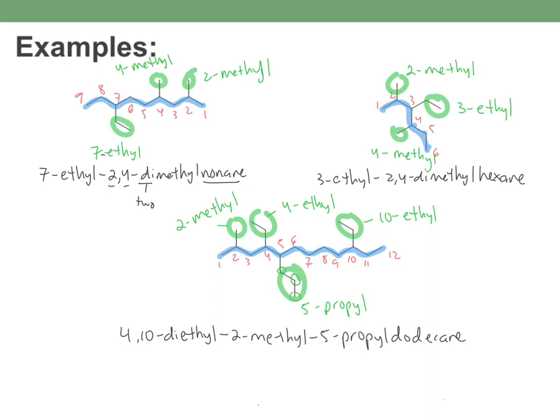That's your first introduction on how to name relatively simple hydrocarbons. In part two, we're going to talk about tiebreaker rules — what if two chains are both the same length, or what if going left or right both place the first substituent on carbon 2? Study up on this, do some practice problems, and watch the next video. Happy studying.